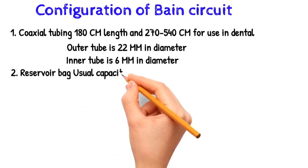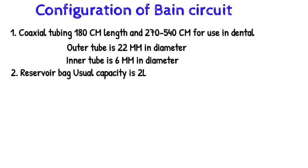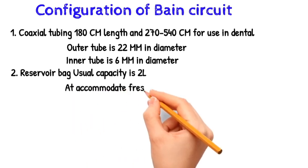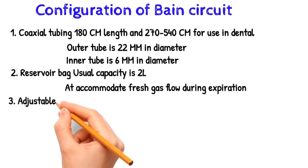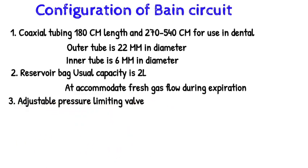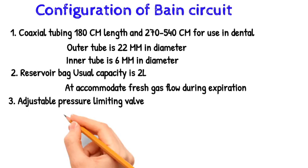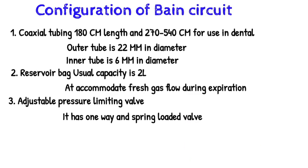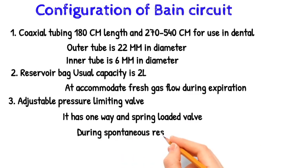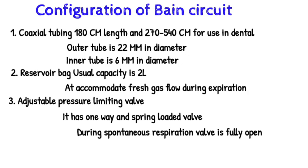The reservoir bag has a usual capacity of 2 liters, made from anesthetic and latex-free rubber, and accommodates fresh gas flow during expiration. The adjustable pressure limiting (APL) valve is always located away from the patient and is adjustable. It has a one-way, spring-loaded valve. During spontaneous respiration, the valve is fully open; during controlled respiration, the valve is adjustable with a dial.